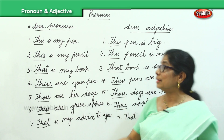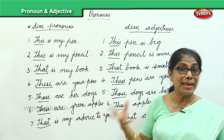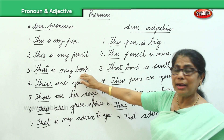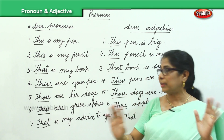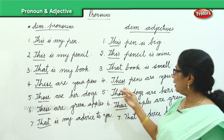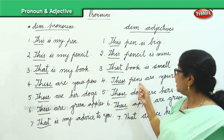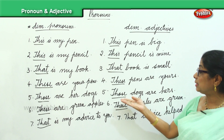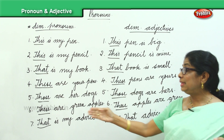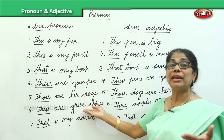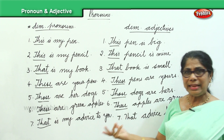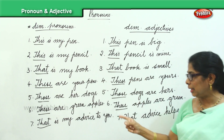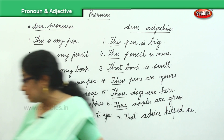'This is my pencil' becomes 'This pencil is mine,' or 'This pencil is big or long or short.' 'That is my book' becomes 'That book is small or big.' 'These are your pens' becomes 'These pens are yours.' 'Those are her dogs' becomes 'Those dogs are hers.' 'These are green apples' becomes 'These apples are green.' And 'That is my advice to you' becomes 'That advice helped me.'